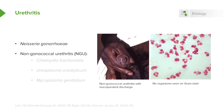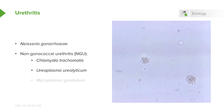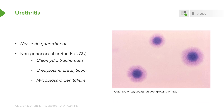And if one were to gram stain this discharge, you would find no organisms — you would find lots of white blood cells, as shown here. The major causes of non-gonococcal urethritis are Chlamydia trachomatis, Ureaplasma urealyticum, and Mycoplasma genitalium.